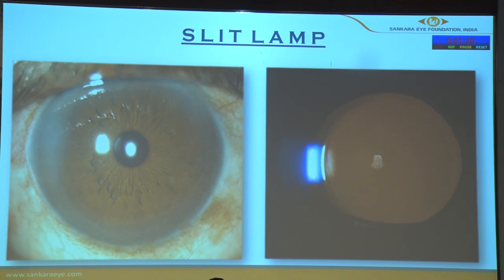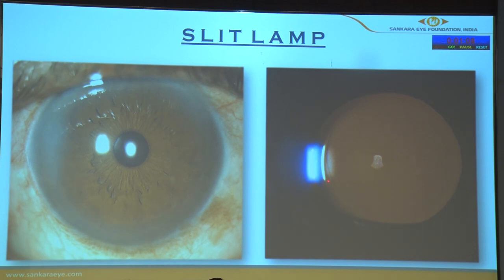These are the post-op pictures where you can see a small reflex highlighting the fact that there is no gap between the iris and the intraocular lens, and a 360-degree depression which is the optic-haptic junction.